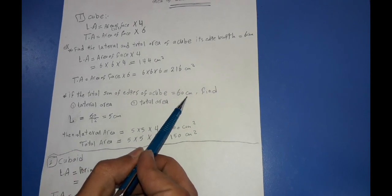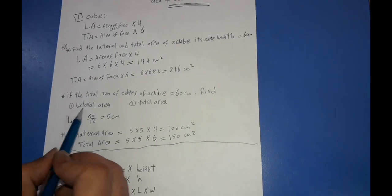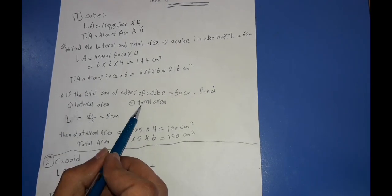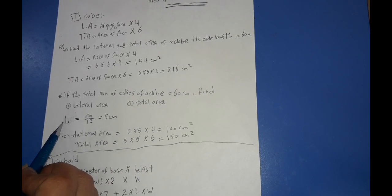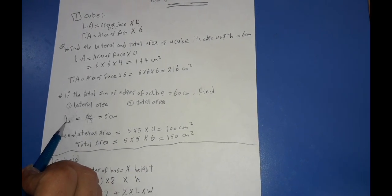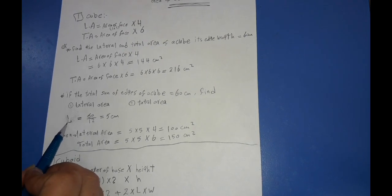Another example: if the total sum of edges of a cube equals 60 cm, find the lateral area and the total area. First, we should know the length of one edge of the cube.